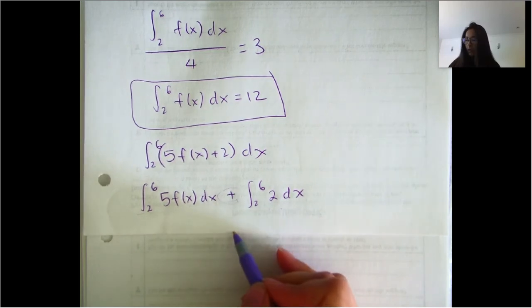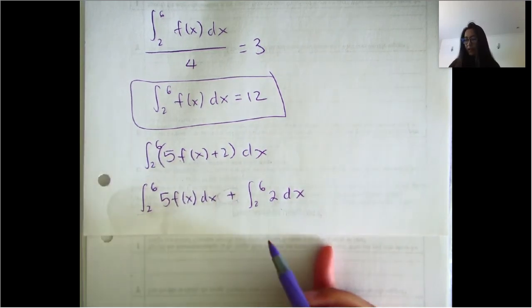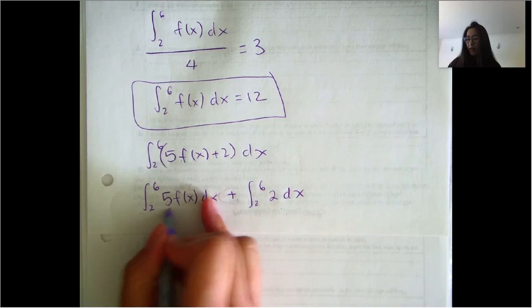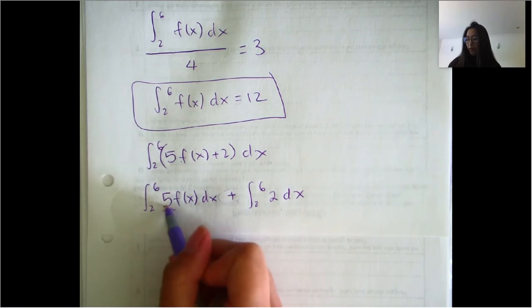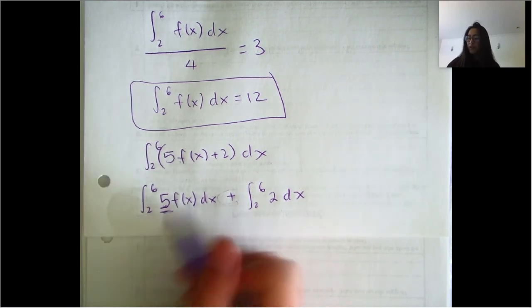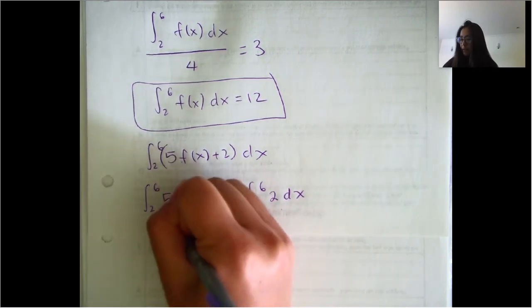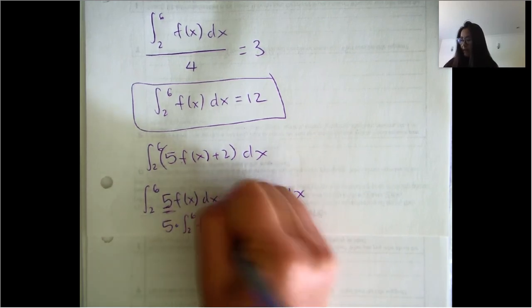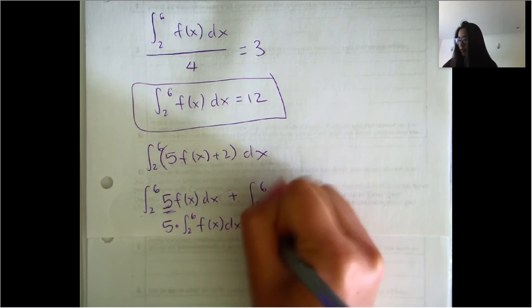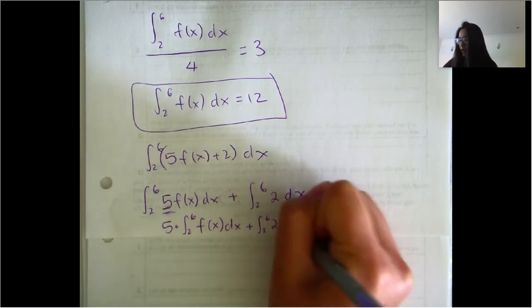So we split the integral across addition. And now we have a constant here. And y'all also know that we can factor this constant out of the integral. So we have five times the integral from two to six of F of X DX plus the integral from two to six of two DX.